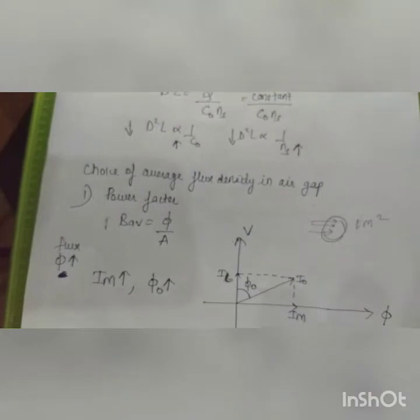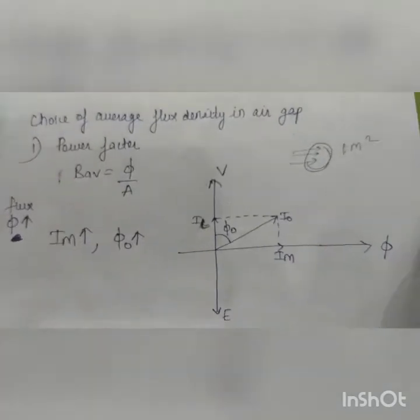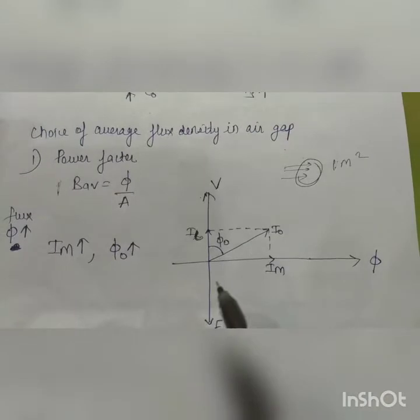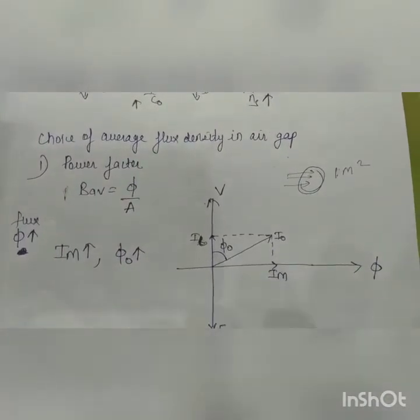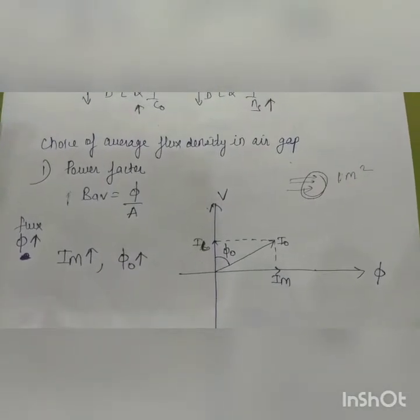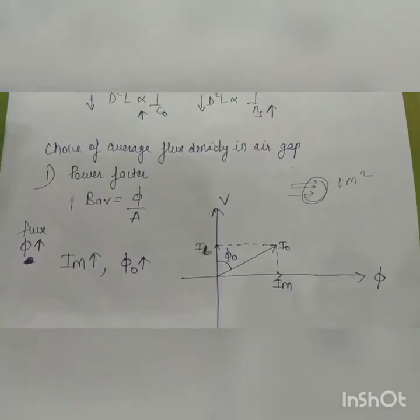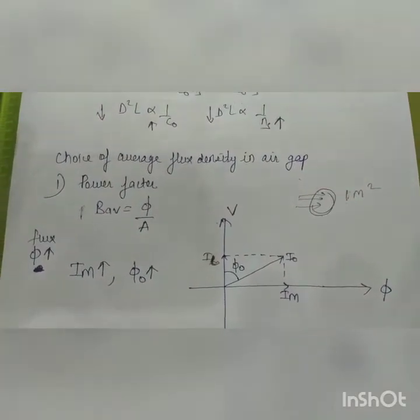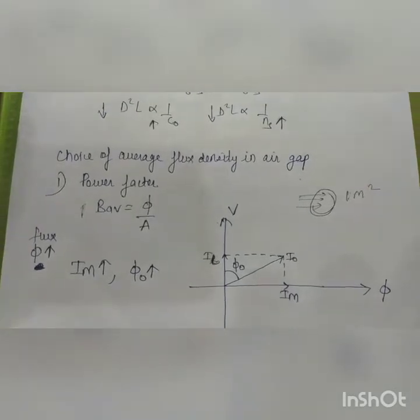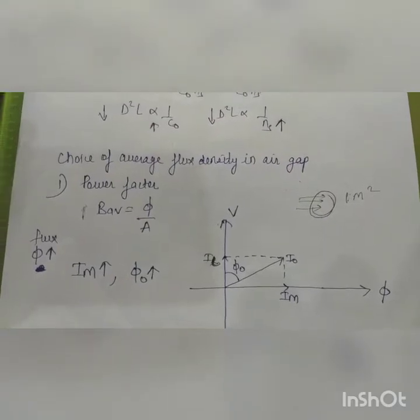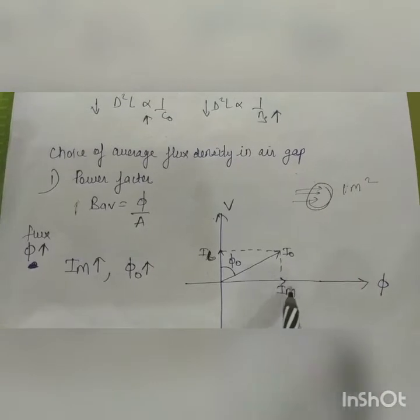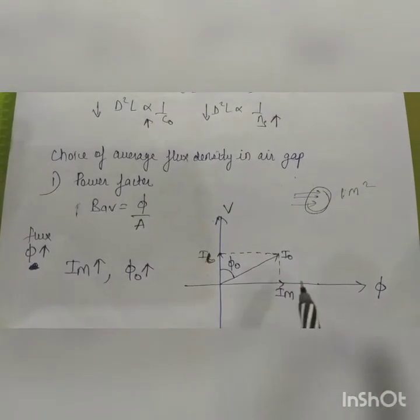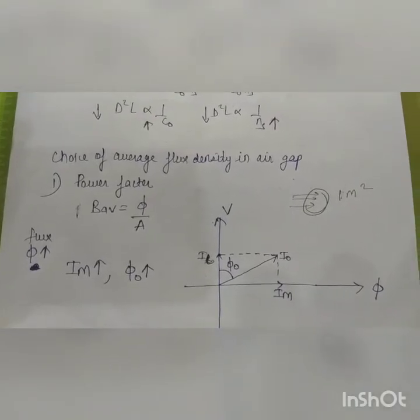If flux increases, Im increases. In the phasor diagram, voltage leads flux by 90 degrees. For an induction motor with an air gap, a magnetizing current is needed to set up flux in the air gap. The magnetizing current Im is in phase with flux, while the loss component (iron loss current) is in phase with voltage.